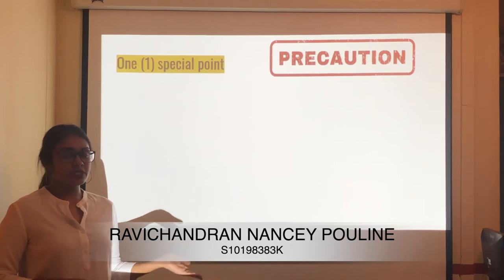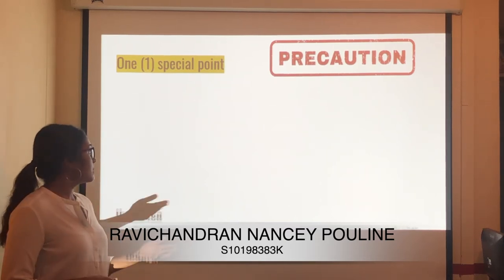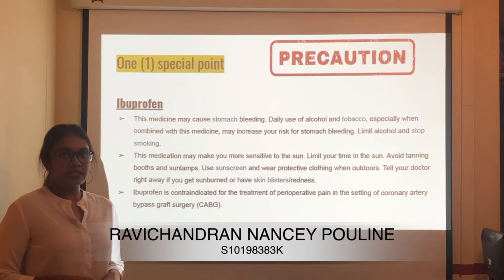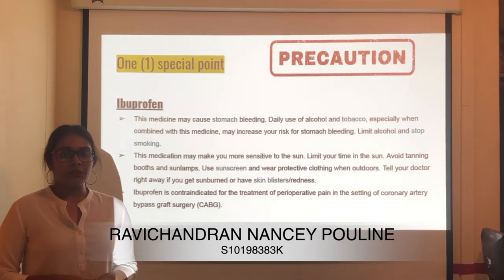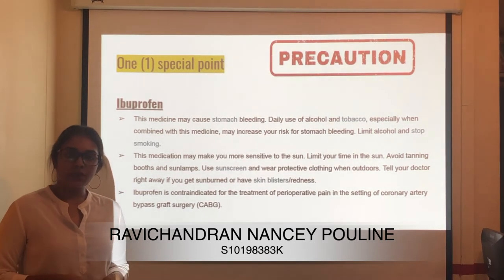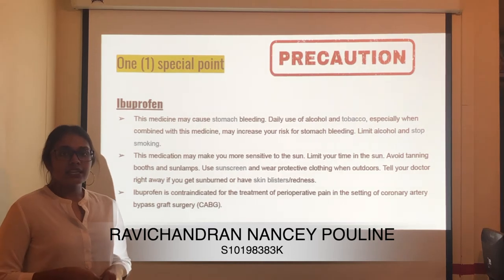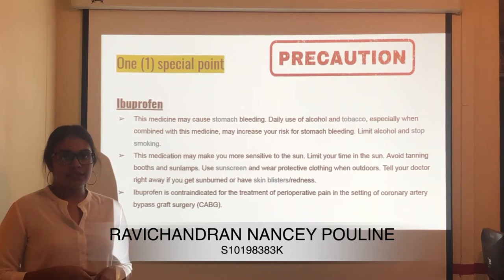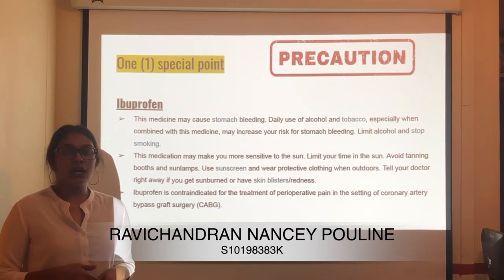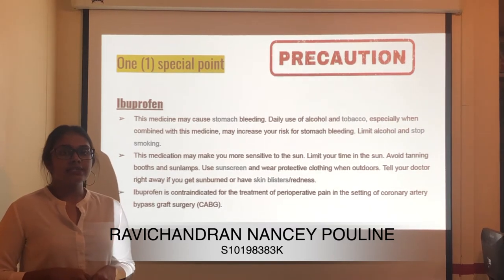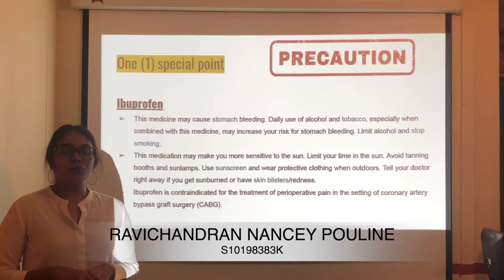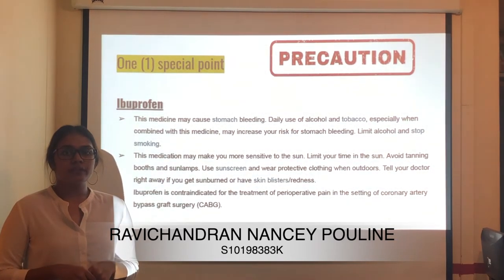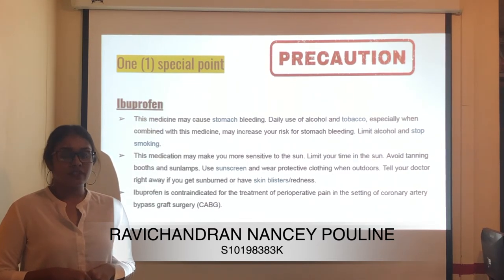Special points for ibuprofen: this medicine may cause stomach bleeding. Daily use of alcohol and tobacco, especially combined with this medicine, may increase the risk of stomach bleeding — therefore, limit alcohol intake and stop smoking. This medication may also make you more sensitive to the sun — limit time in the sun, avoid tanning beds and sun lamps, use sunscreen and wear protective clothing outdoors, and tell your doctor immediately if you get sunburn, blisters, or redness. Ibuprofen is also contraindicated for treatment of perioperative pain in the setting of coronary artery bypass graft surgery.